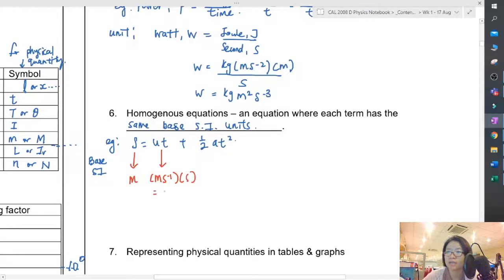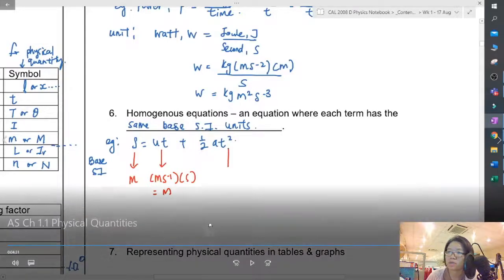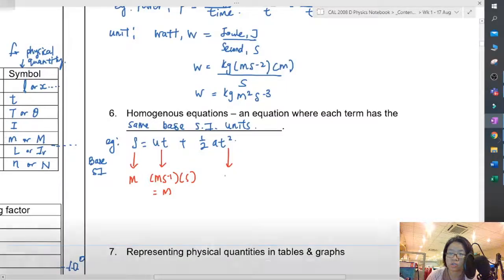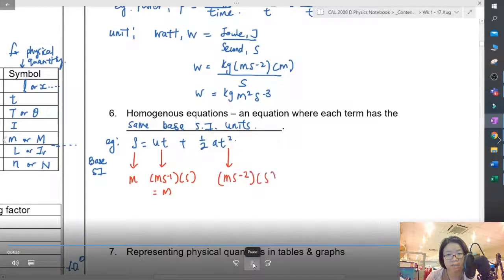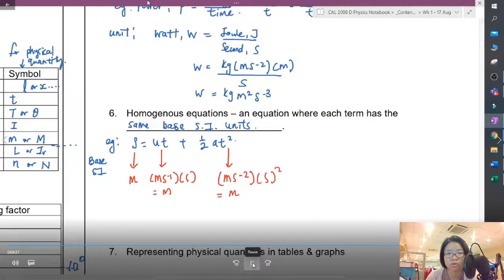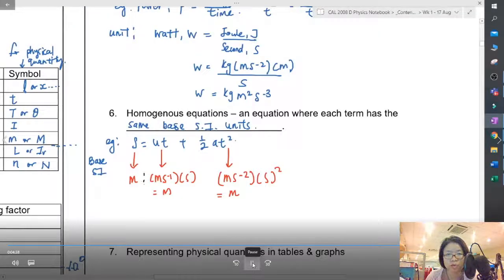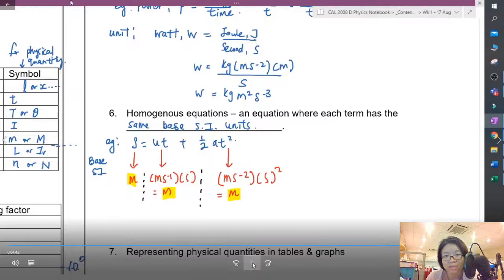The unit for distance s is meter. The unit for velocity u is ms⁻¹, but the unit for t is s, so you simplify this, you get m. Just like the unit for acceleration is ms⁻², and the unit for time is s², so you get m again. So you notice all three terms have the same unit.